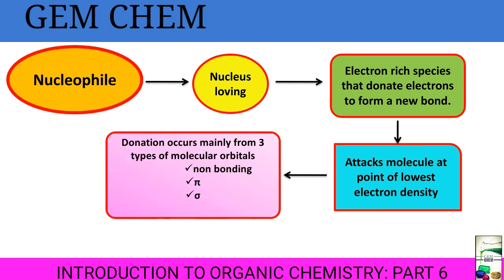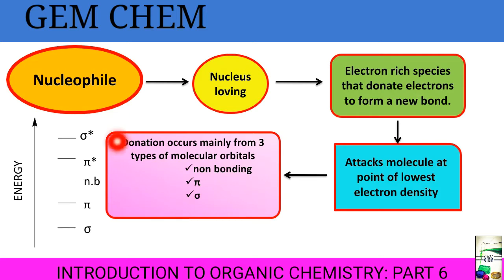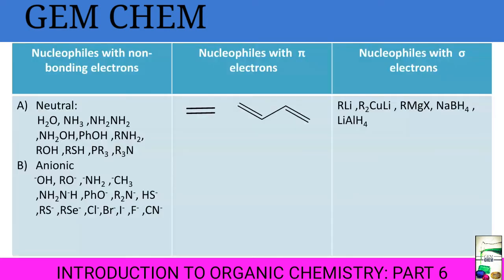Nucleophiles are of three types — donation occurs mainly from three types of molecular orbitals: non-bonding, pi, and sigma. When electrons are present in these molecular orbitals they can be easily donated. Electrons in non-bonding orbitals are donated much more easily, as they are at higher energy than electrons in sigma orbitals. So nucleophiles with non-bonding electrons are better donors than nucleophiles with sigma electron pairs.